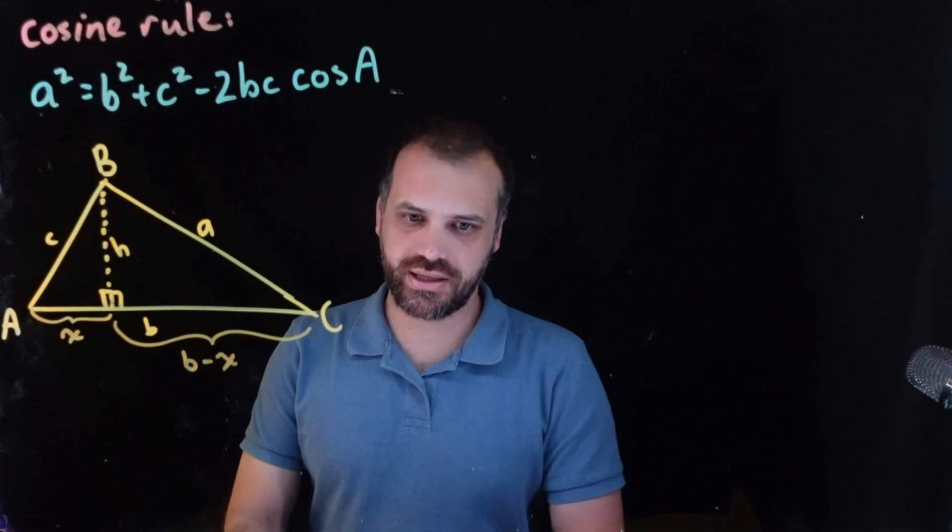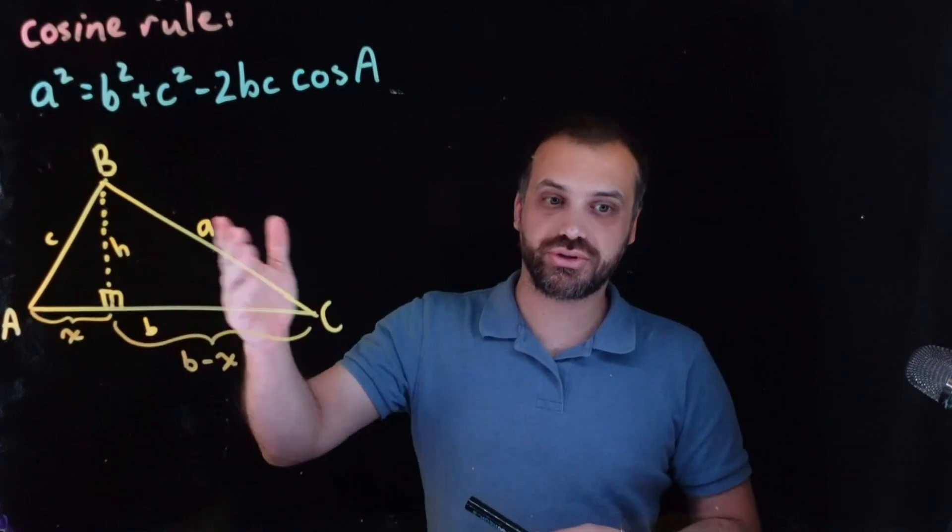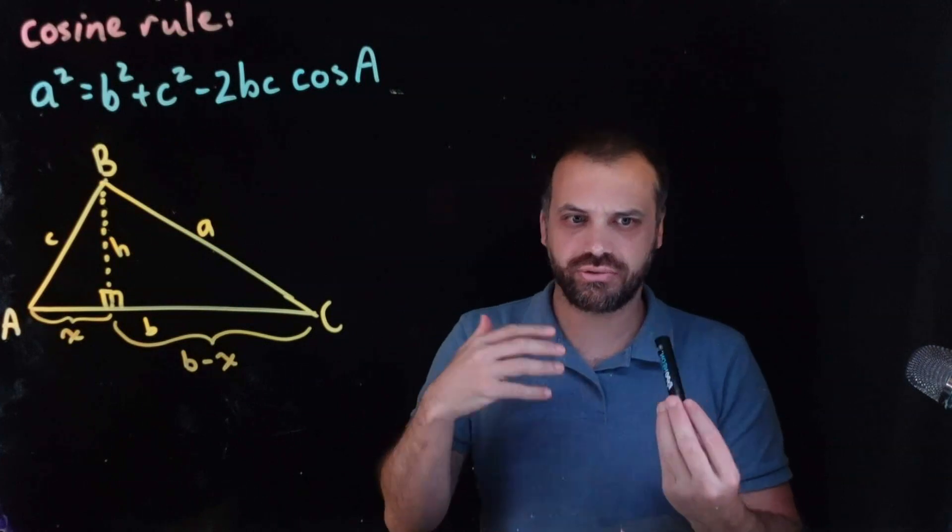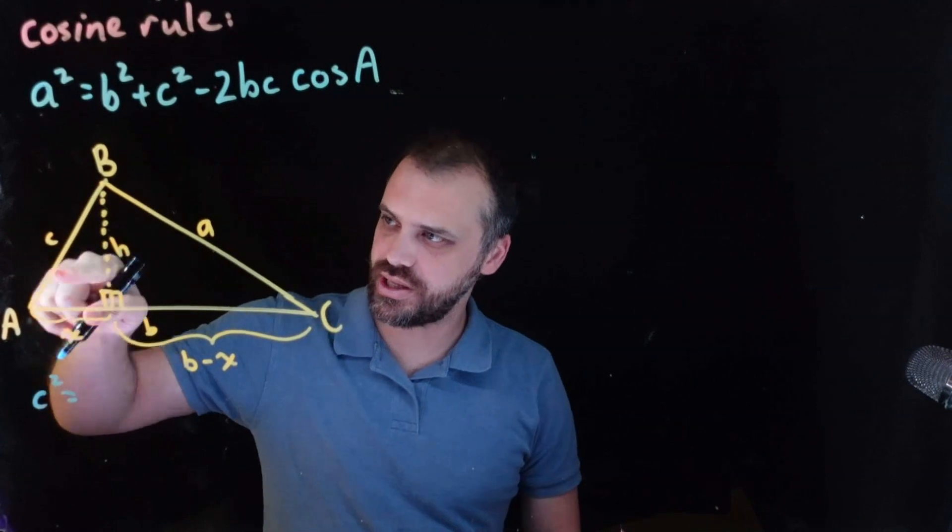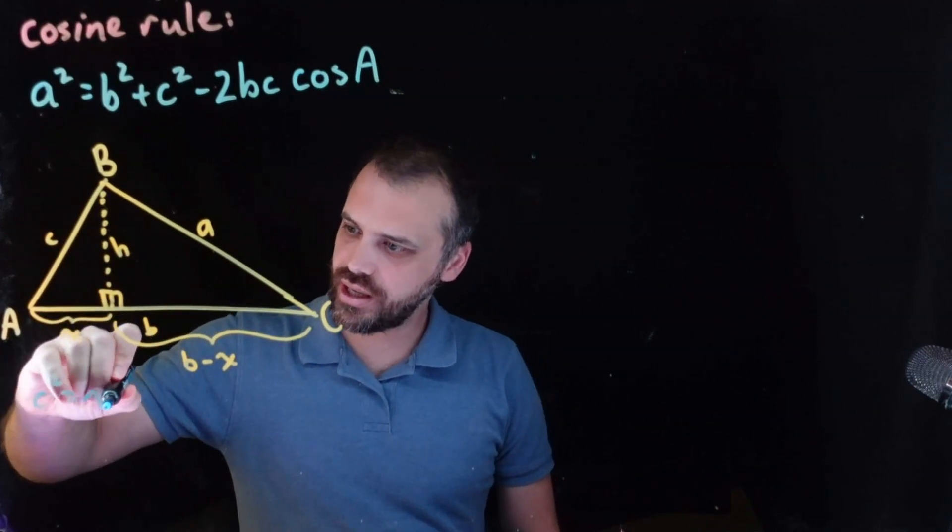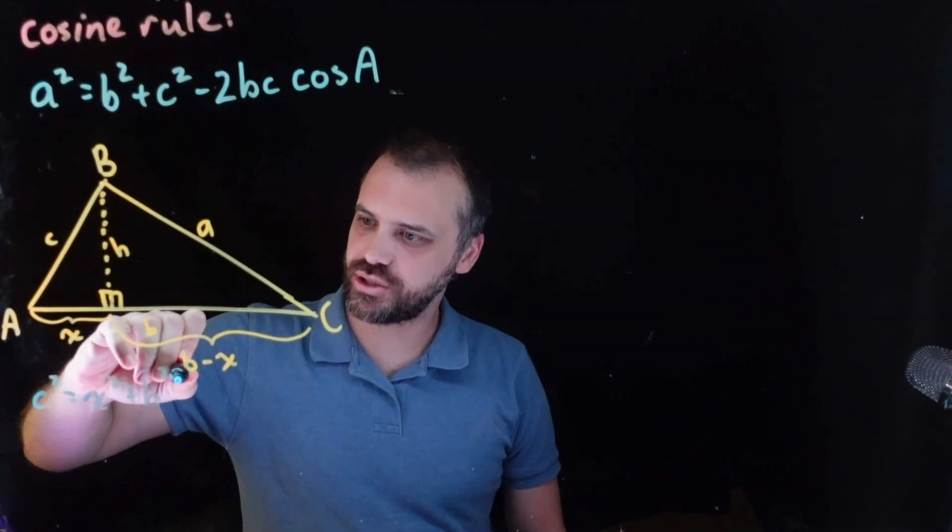All right, with all of that in mind, we can now create two Pythagorean relationships. With our first triangle over here, we can say that the hypotenuse C squared equals X squared plus H squared.